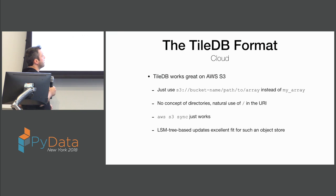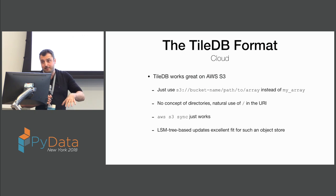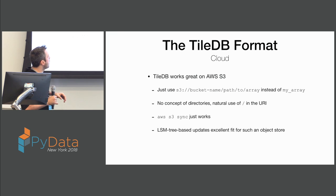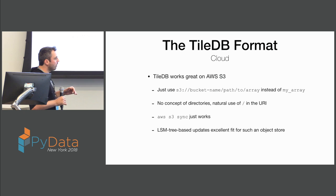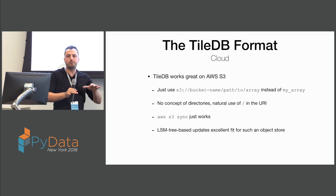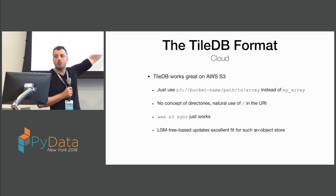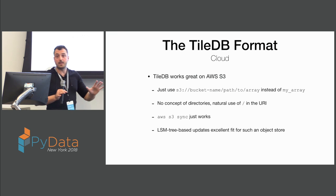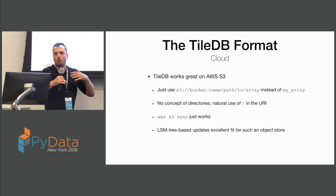We have a collection of filters: different compression algorithms, byte and bit shuffle, encryption, delta encoding, bit-width reduction — and this is a growing list. TileDB works beautifully on S3, and soon on Azure, Google Cloud, and Alibaba Cloud — this is an artifact of the format. If you have code that works on your laptop and you just change the array name to an S3 URI, everything just works as efficiently. You don't need to change to another library or set up a service.